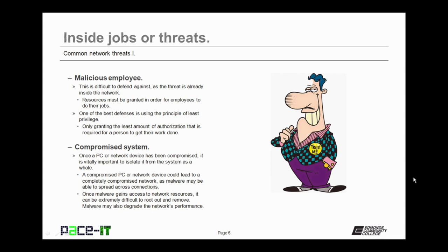Compromised systems are another threat. Once a PC or network device has been compromised, it is vitally important to isolate it from the system as a whole. A compromised PC could lead to a completely compromised network as malware may be able to spread across its connections. Once malware has gained access to network resources, it can be extremely difficult to root out and remove. Malware may also degrade the network's performance, causing other issues.